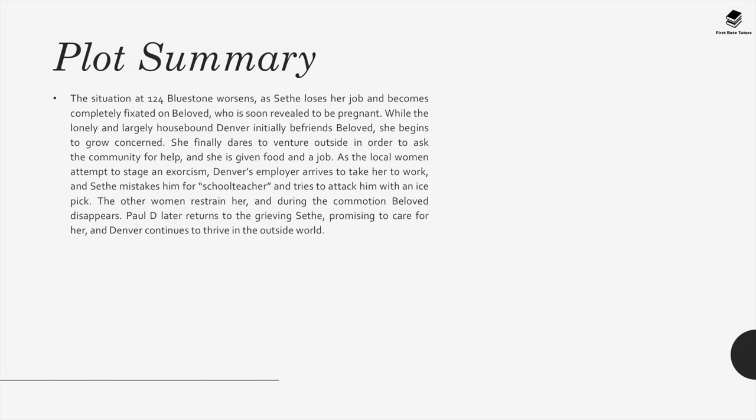The situation at 124 Bluestone worsens as Sethe loses her job and becomes completely fixated on Beloved, who is soon revealed to be pregnant. While the lonely Denver initially befriends Beloved, she grows concerned and finally ventures outside to ask the community for help, and is given food and a job. As the local women attempt to stage an exorcism, Denver's employer arrives to take her to work and Sethe mistakes him for schoolteacher, trying to attack him with an ice pick. The women restrain her and during the commotion, Beloved disappears. Paul D. later returns to the grieving Sethe, promising to take care of her, and Denver continues to thrive in the outside world.